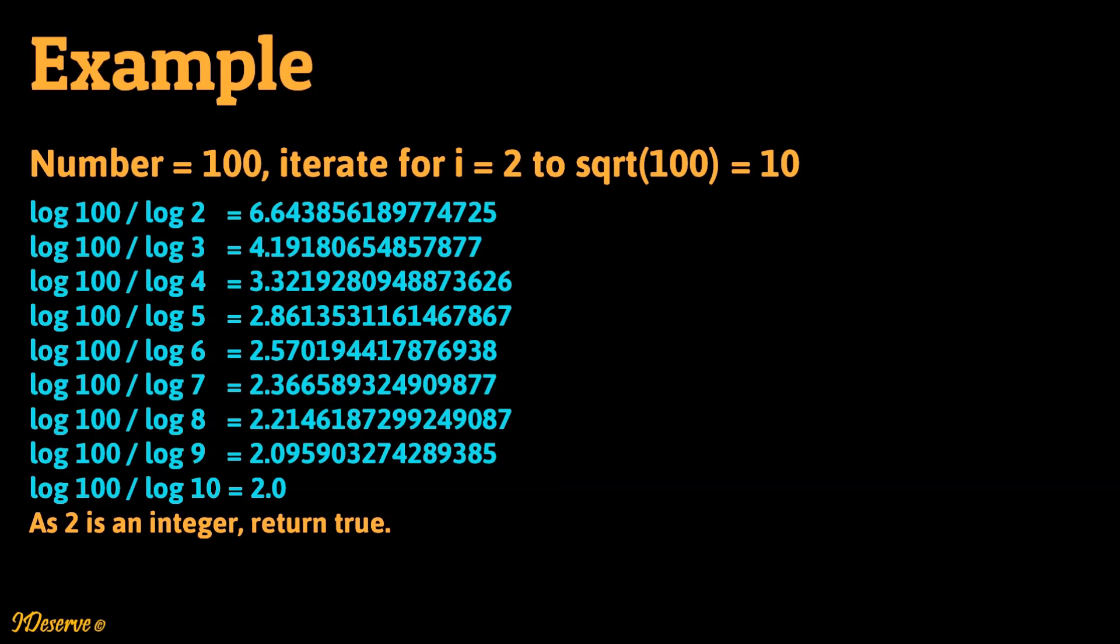We can see calculations for all the iterations here. For i equal to 10 we get log 100 by log 10 as 2 which is an integer hence return true.